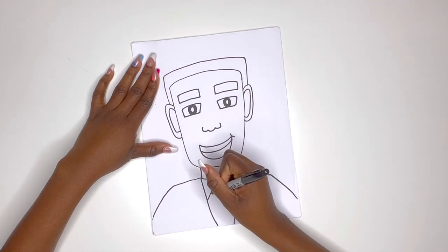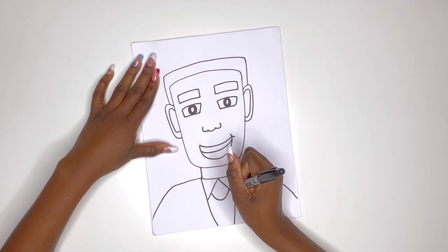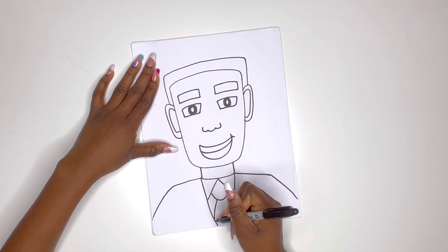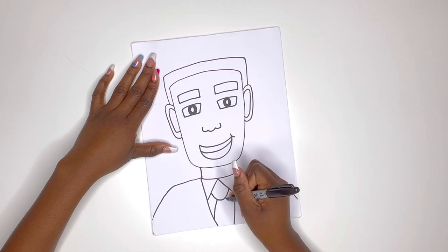coming together. I'm gonna draw a U to make his tie and then two lines coming down from that U.